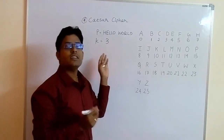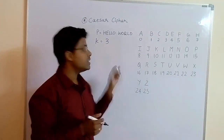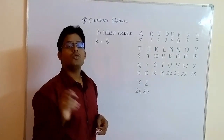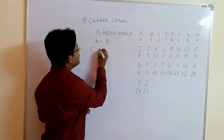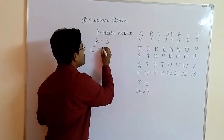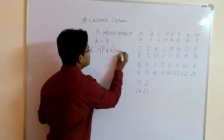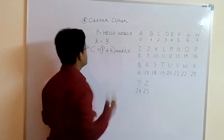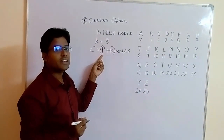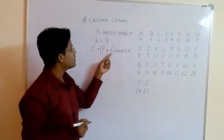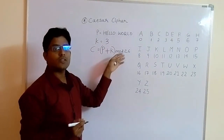For Caesar cipher, the key is fixed: key equals 3. This number 3 indicates the number of shifts we are going to perform. To find the cipher text of the plain text, you follow the formula: C equals (P plus K) mod 26, where C denotes cipher text, P denotes the plain text letter, and K denotes the key, which is fixed at 3. We take the modulo 26 operation of whatever we get.